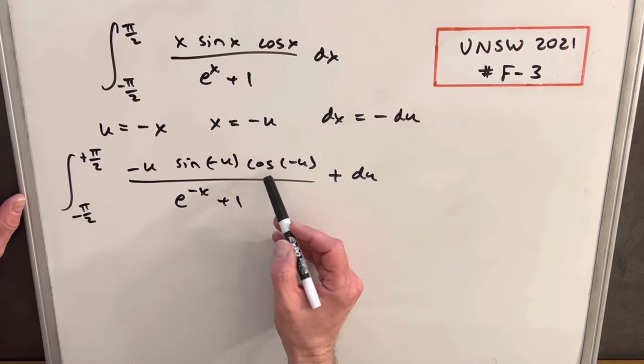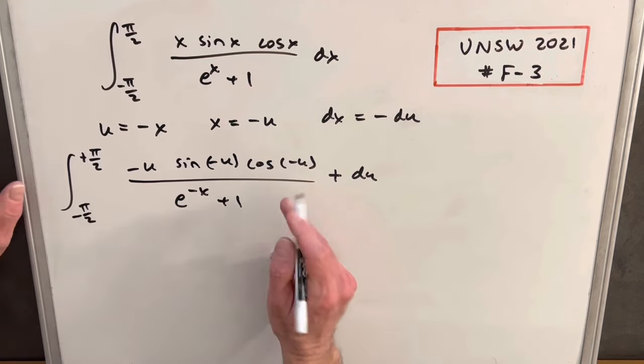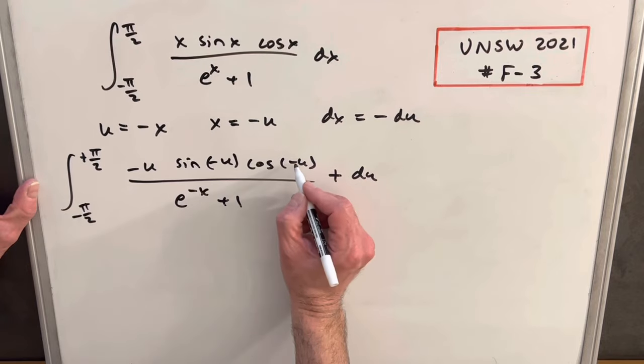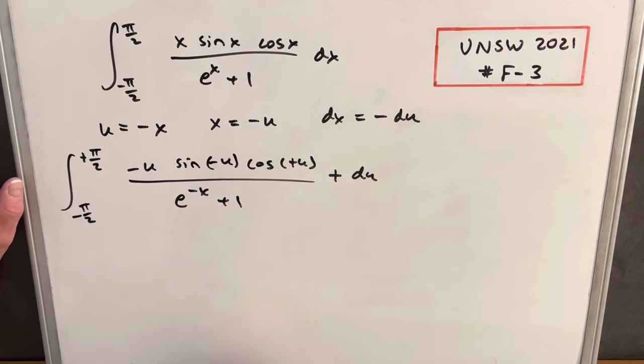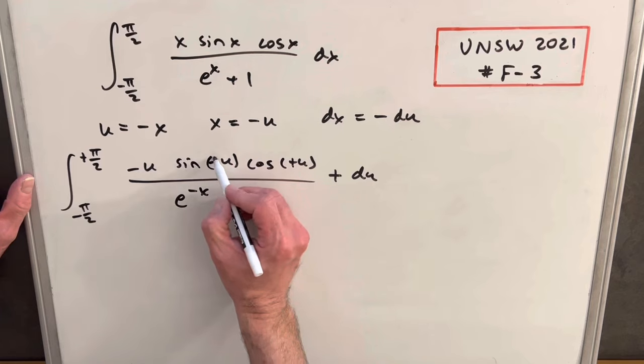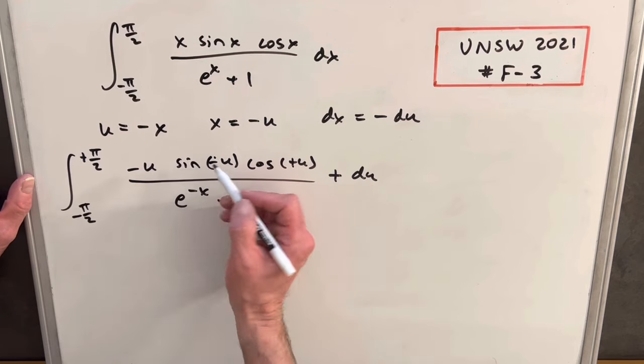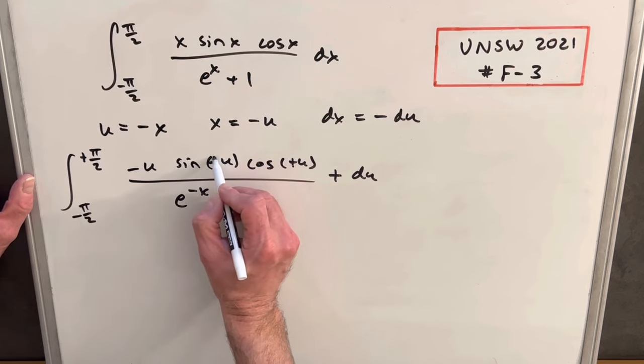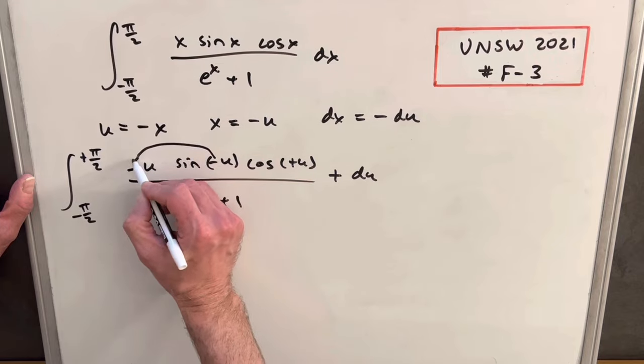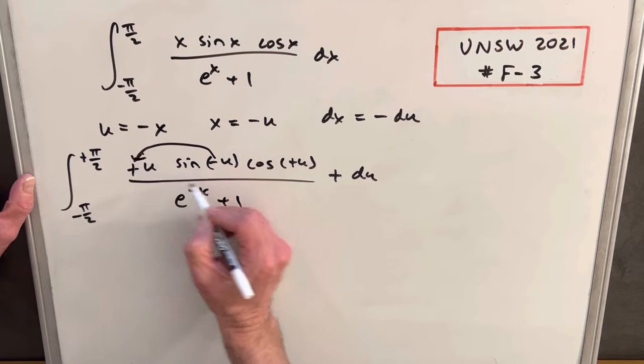Then we can do some things with even and odd functions here. Cosine minus u, because it's an even function, we can just turn that to a plus and ignore the negative. This minus sign on sine, sine's an odd function, so we can take a minus sign out and use it to make this a plus here.